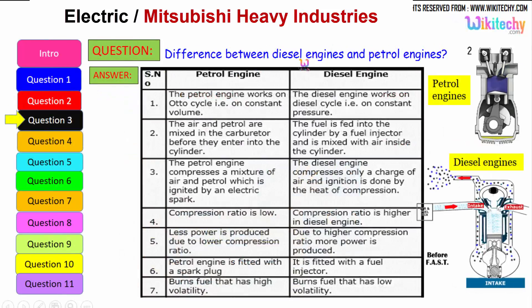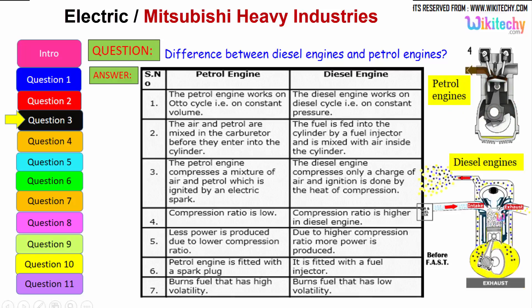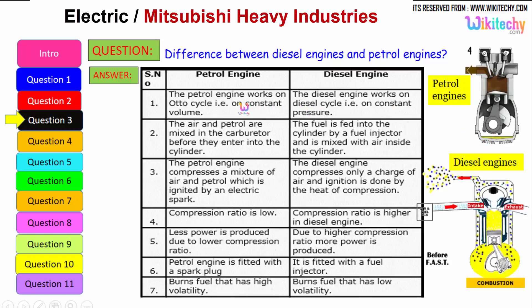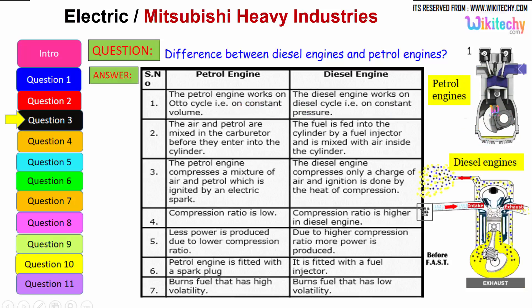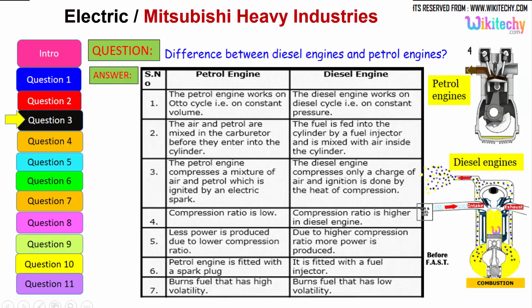Let us see the difference between the diesel engine and the petrol engine. The petrol engine works on the Otto cycle, therefore on constant volume, whereas the diesel engine works on the diesel cycle, on constant pressure.